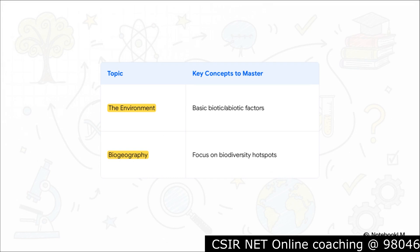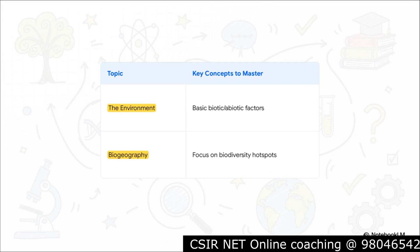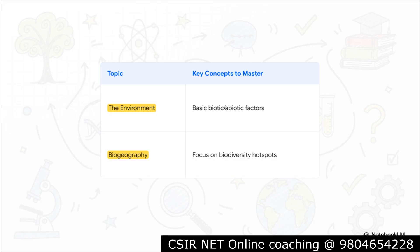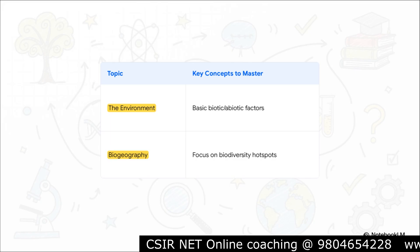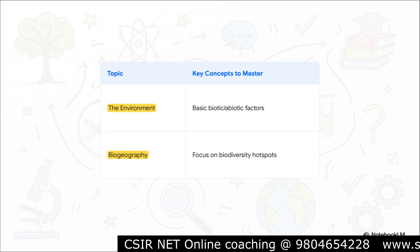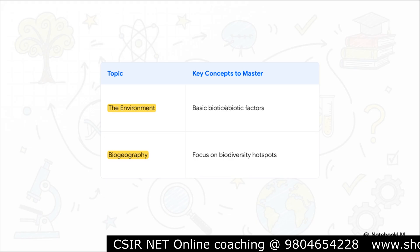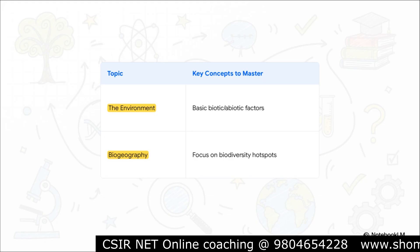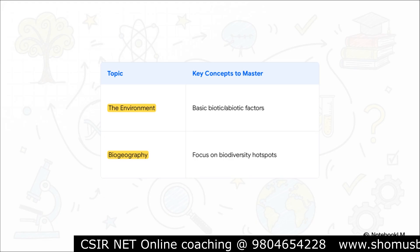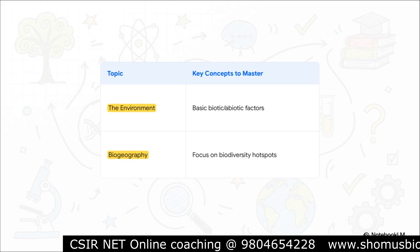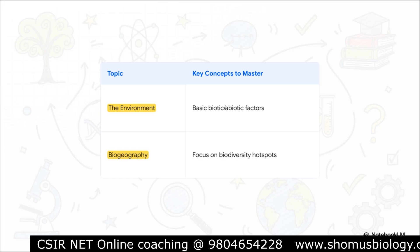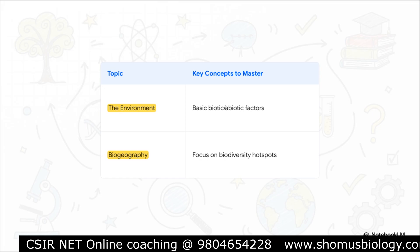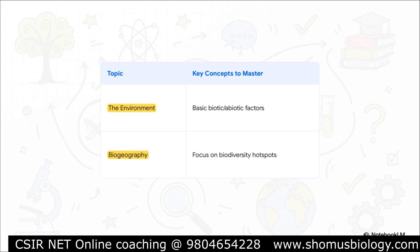Finally, we've got the red topics. This does not mean ignore them — it just means don't get totally bogged down in the details. For the environment, you really just need the plus-two level basics on biotic and abiotic factors. And for biogeography, the one key concept they almost always ask about is biodiversity hotspots. Just know that, and you're good to move on.